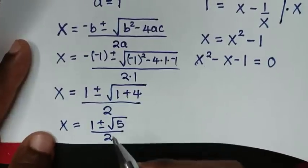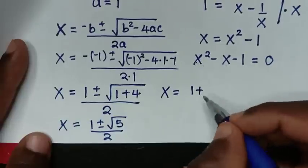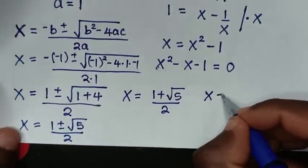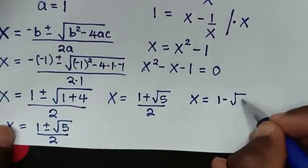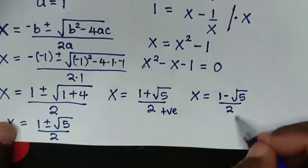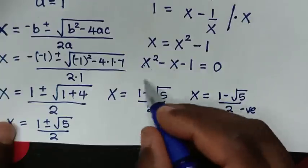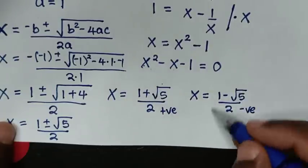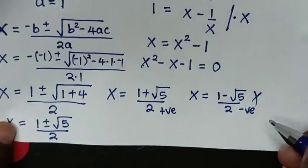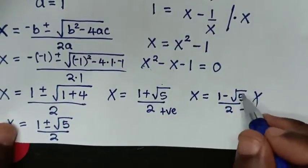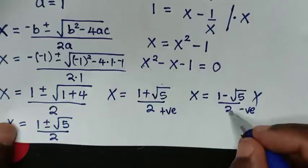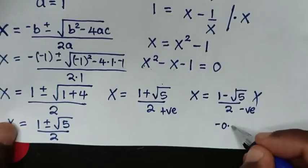We have two solutions: x equals (1 plus square root of 5) over 2, which is a positive value, and x equals (1 minus square root of 5) over 2, which is a negative value approximately equal to negative 0.618. The positive value is the golden ratio. To check, if we substitute the negative value x equals negative 0.618 into the original equation, x minus 1 over x becomes negative 0.618 minus 1 divided by negative 0.618, which equals negative 1.618.